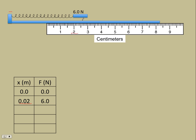Now if we pull it back further, I think you know what's going to happen. The force from the spring goes up. At the 4 cm or 0.04 meter point it requires 12 newtons to hold it there. Let's pull it back now to 6 cm, and now the force sensor is reading 18 newtons.